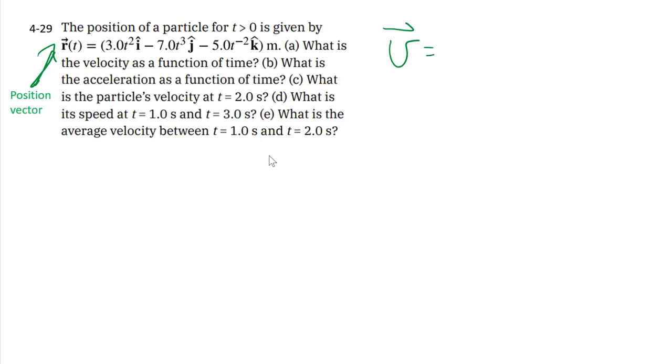So in 3D, the instantaneous velocity is defined as the derivative of this positional vector. But what does it mean to take the derivative of a vector? Thankfully, with the i, j, k unit vector notation, we can sidestep that.